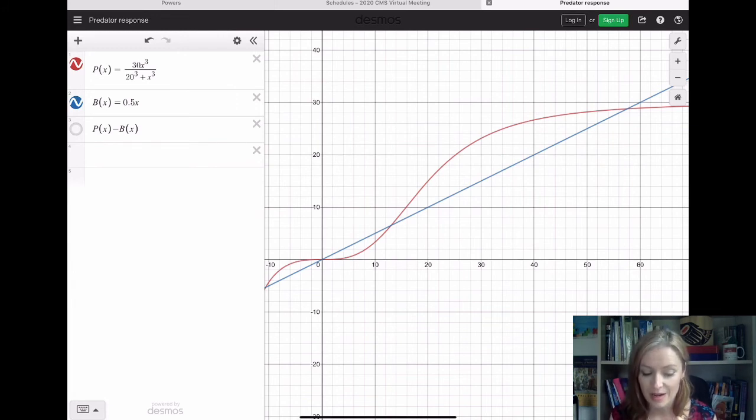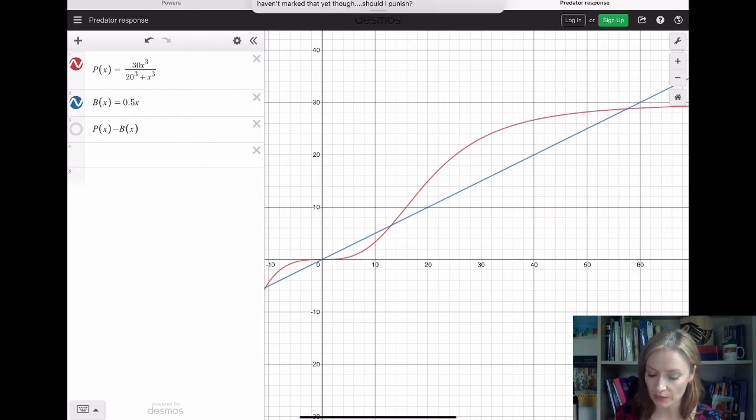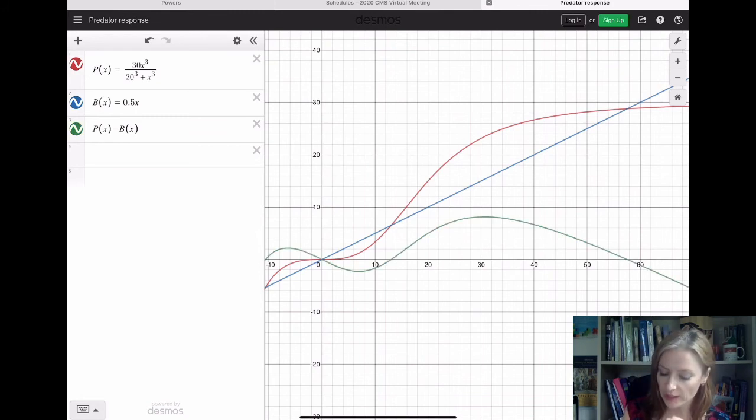prey reproduction rate, which is 0.5x as we've determined. Now these two functions actually intersect at three points. At 0, if there's no prey and there's no predator, nothing is going on in the ecosystem. And then there were two other points where they actually intersect.